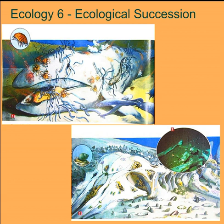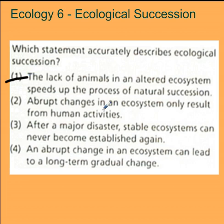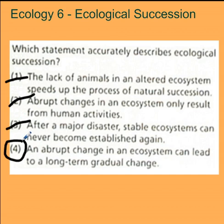Let's do a couple of sample problems. Here's a question from an old Regents exam: which statement accurately describes ecological succession? We can eliminate several choices: 'the lack of animals in an altered ecosystem speeds up the process of natural succession' — nothing supports that. 'Abrupt changes in an ecosystem only result from human activities' — no, natural disasters cause changes too. 'After major disasters, stable ecosystems can never become established again' — no, succession leads to stable ecosystems. So the right answer is: an abrupt change in an ecosystem can lead to a long-term gradual change. That's the definition of succession.